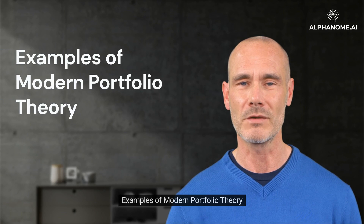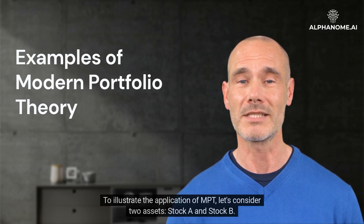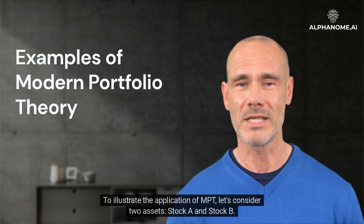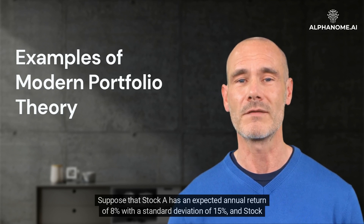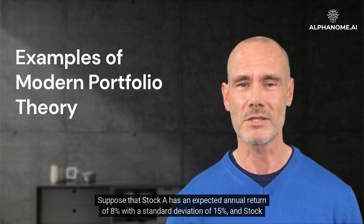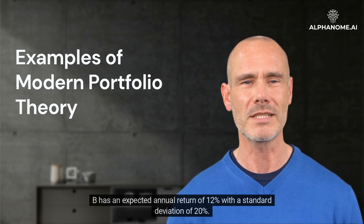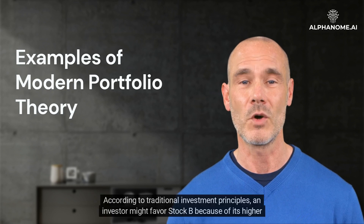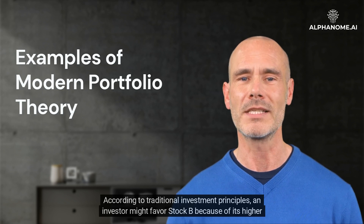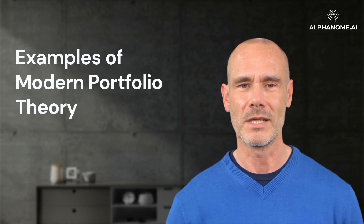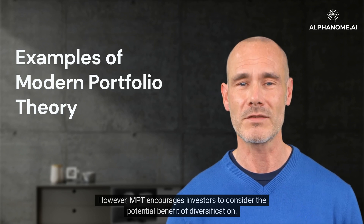Examples of Modern Portfolio Theory. To illustrate the application of MPT, let's consider two assets, stock A and stock B. Suppose that stock A has an expected annual return of 8% with a standard deviation of 15%, and stock B has an expected annual return of 12% with a standard deviation of 20%. According to traditional investment principles, an investor might favor stock B because of its higher expected return. However, MPT encourages investors to consider the potential benefit of diversification.